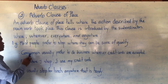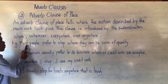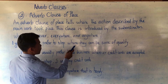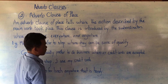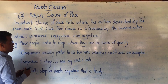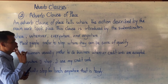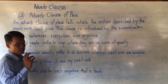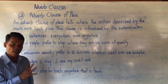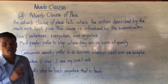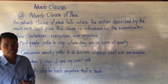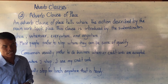Look at the example. 'Most people prefer to stop where they can be sure of quality.' This is a complex sentence. When talking about a complex sentence, you have to think of two clauses: one is the Independent Clause or Main Clause, and the other is the Dependent Clause or Subordinate Clause.